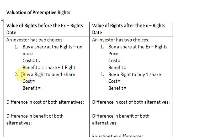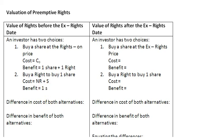The other alternative is to buy a right to buy one share directly. Here, we need to ask two things: first, what is the number of rights N needed to entitle you to buy one share? Second, what is the total amount to pay for those rights? That is N times R, where R is the price of each right. When you exercise this right, you also pay the subscription price S. So the total cost of this alternative is NR plus S, and the benefit is one share.